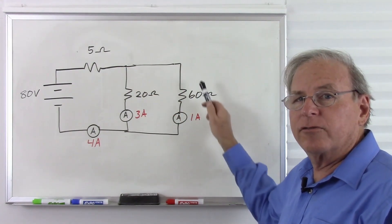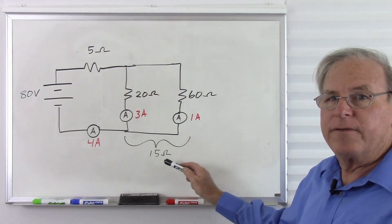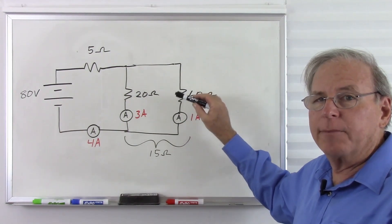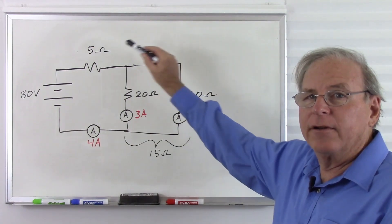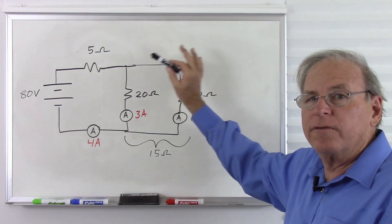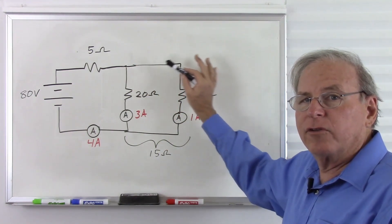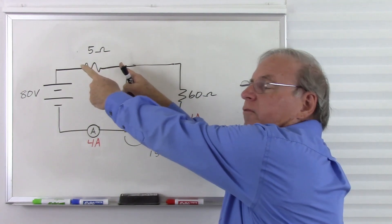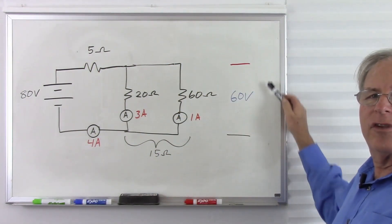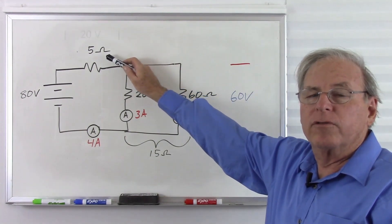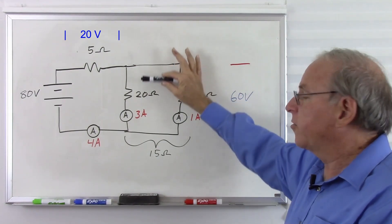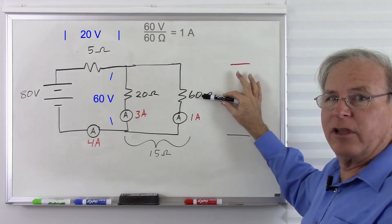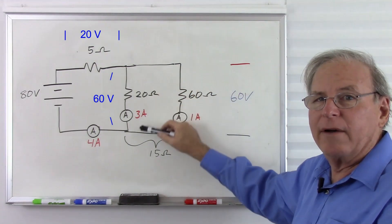The two parallel resistors together act like 15 ohms. With 15 ohms and 5 ohms in series totaling 20 ohms, we have three-quarters of resistance in the parallel section and one-quarter in the 5 ohm resistor. So we get 60 volts across the parallel section and 20 volts across the 5 ohm resistor. Confirmed: 60 volts across 20 ohms gives 3 amps, and 60 volts across 60 ohms gives 1 amp.